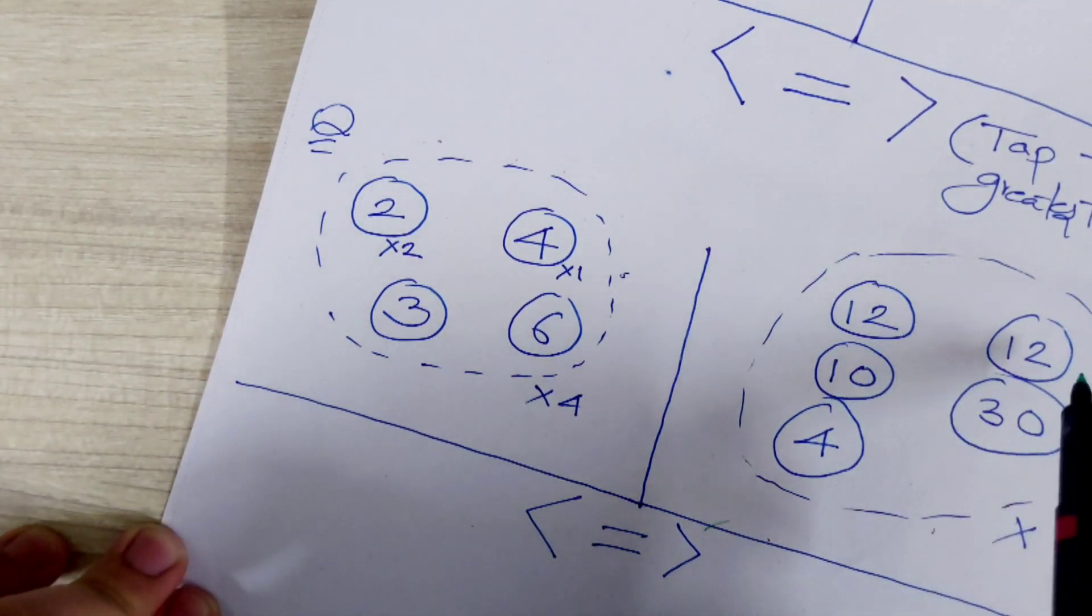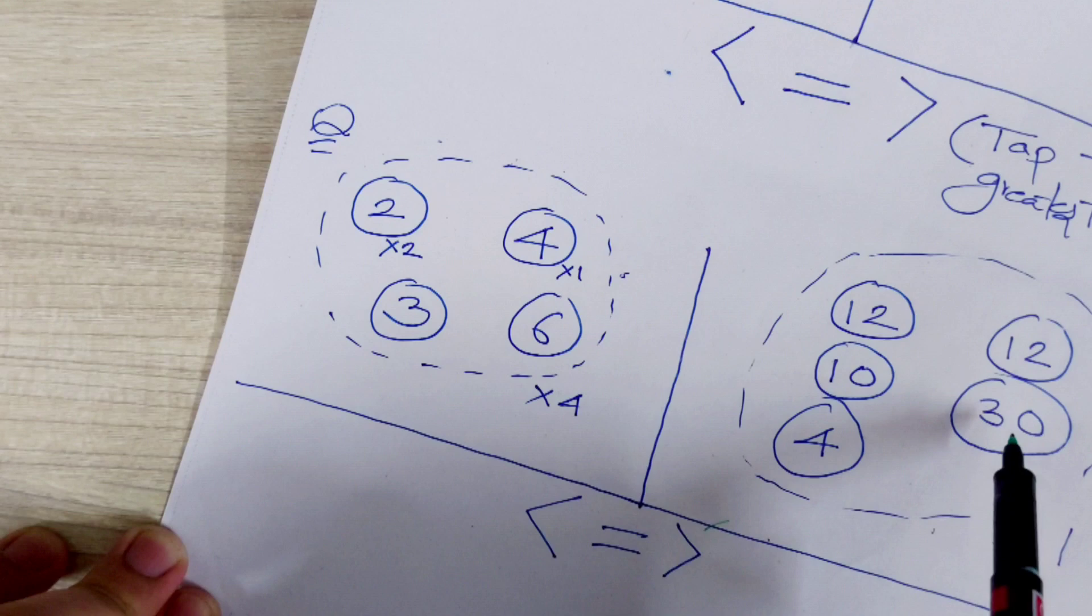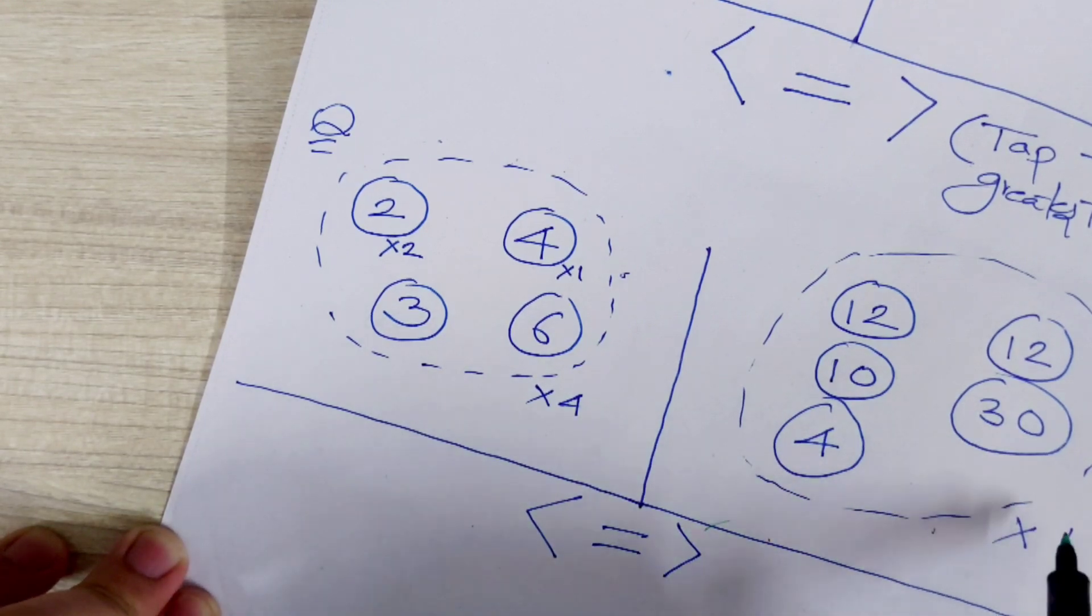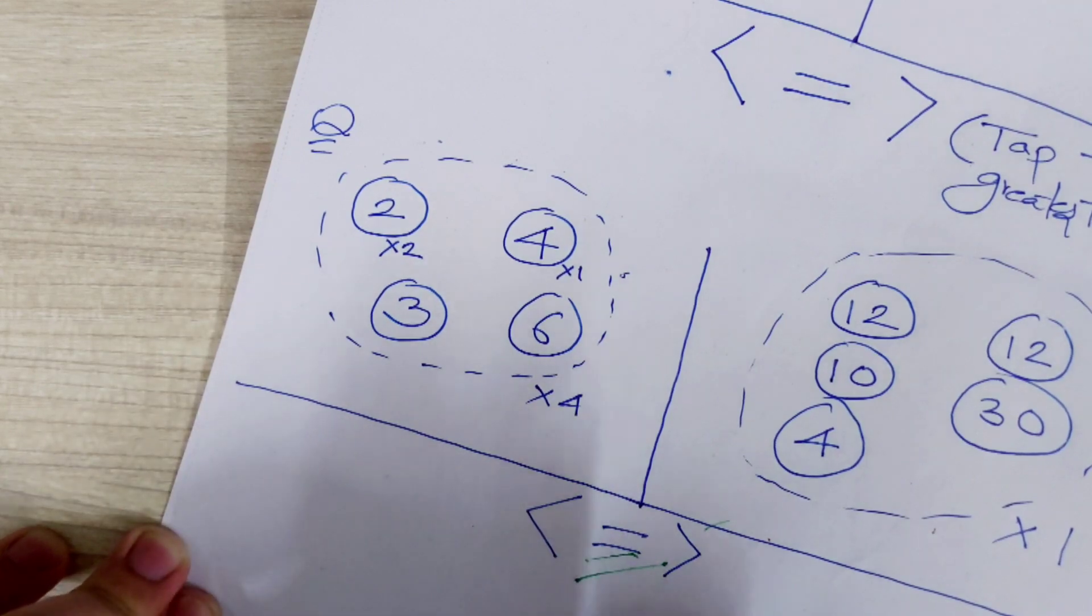And here 12 and 12, 24. And 10, 34. And 30, 60. And 68 into 1, 68. Both are equal. Then equal to sign. Got it guys? As simple.